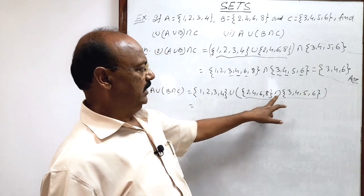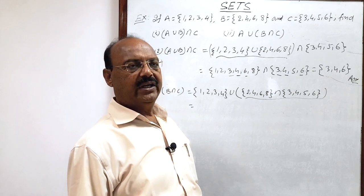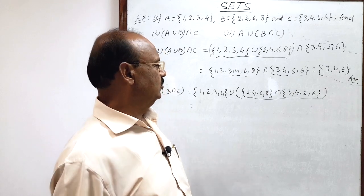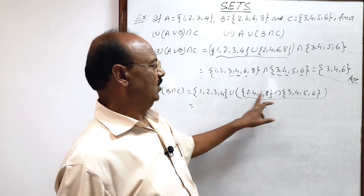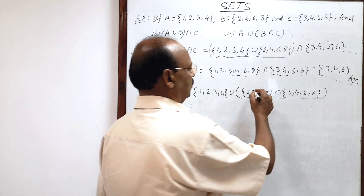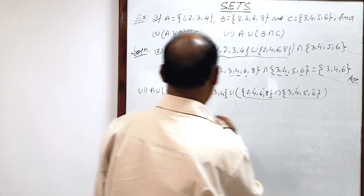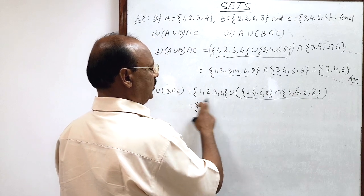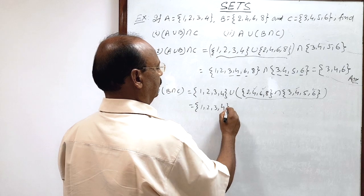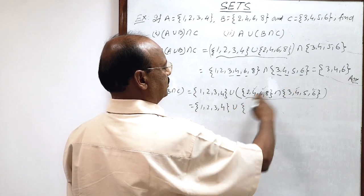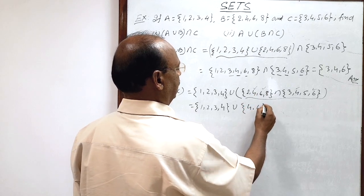Here intersection is there. When we find intersection of two sets we collect only common elements. You see which elements are common: 2 is not common, 4 is common in both sets, and 6 is common. So B∩C gives the set {4, 6}.